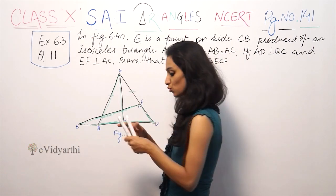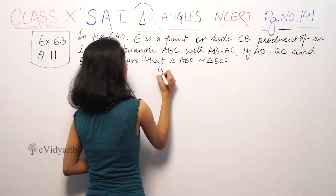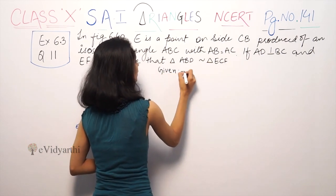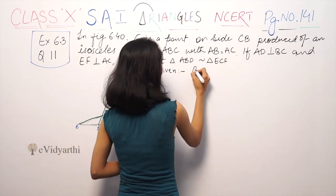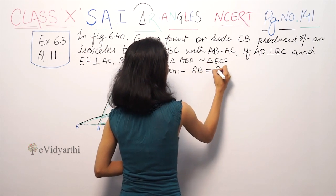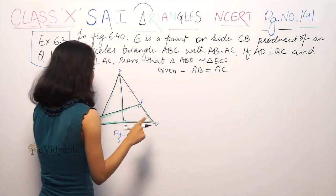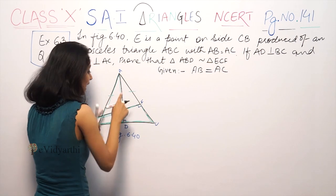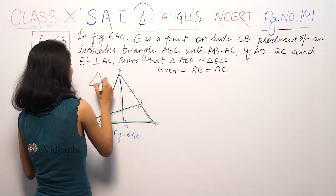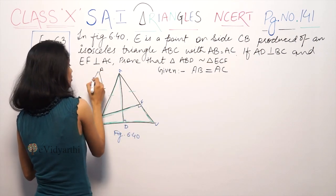To prove two triangles are similar, the first thing we write is given. So given is, we have that AB is equal to AC. In triangle ABC, AB equals AC. We have given that in one triangle, two sides are equal.